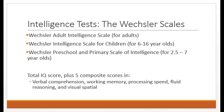The other most widely used intelligence tests are the Wechsler tests, which are similar to the Stanford-Binet, but they have separate tests specially geared towards either adults, older children and adolescents, and young children. In addition to giving you one overall IQ score, these scales also provide composite scores in the areas of verbal comprehension, working memory, processing speed, fluid reasoning, and visual-spatial. This is nice because it allows the examiner to quickly see whether the individual is strong or weak in different areas of intelligence.